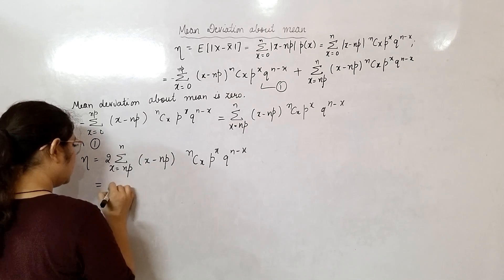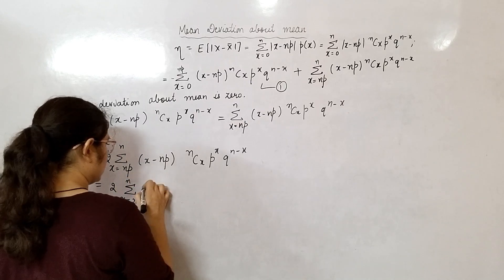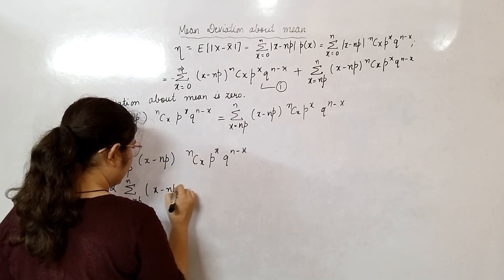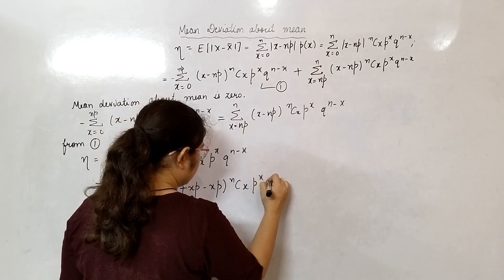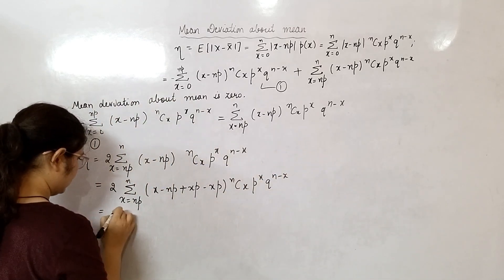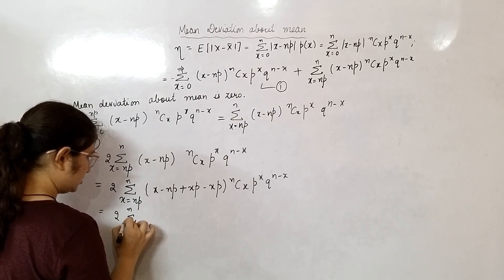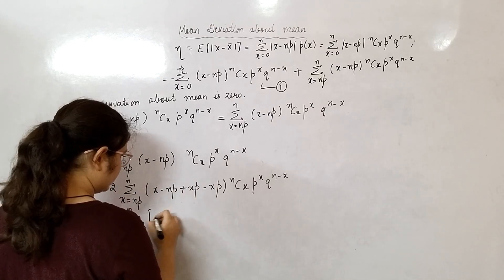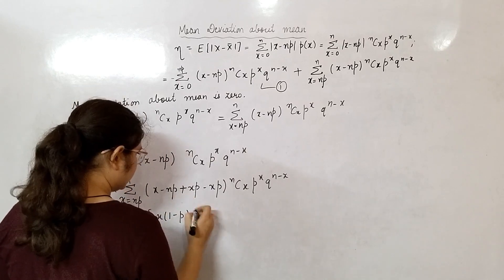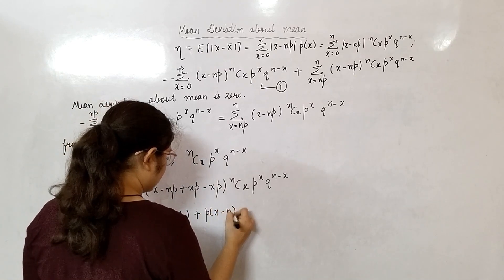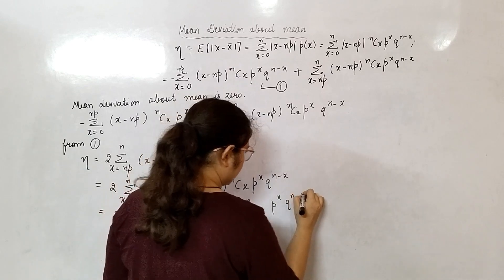In the next step I am adding and subtracting xp inside the expression. η = 2 · summation x from np to n, and I separate the bracket: taking x(1−p) from one part and p(x−n) from another, times nCx · p^x · q^(n−x).